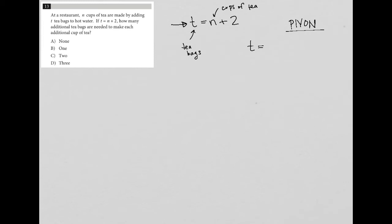Now, by looking at this, I know that T needs to be greater than 2, because I'm going to add 2 to whatever n is. Let's start with n. Let's say I just wanted one cup of tea. So n equals 1.